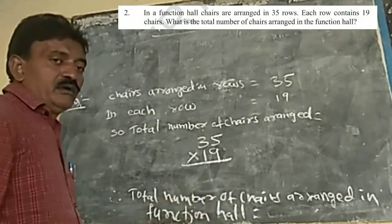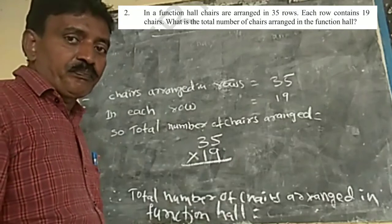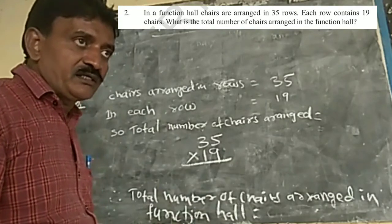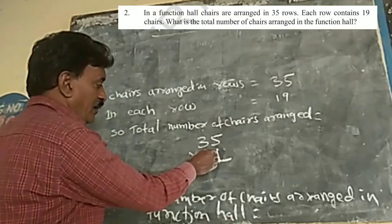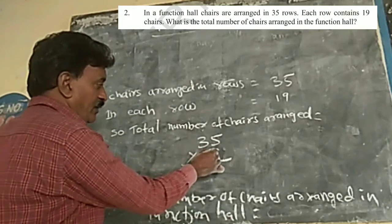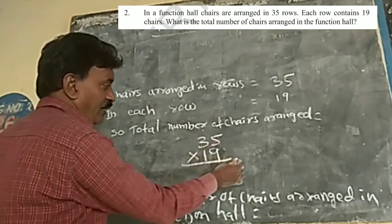So we will directly multiply. Because you are the fourth class, you have to learn 20 tables up to. So we will multiply 19 tables. First you go, 19, 5, 95.